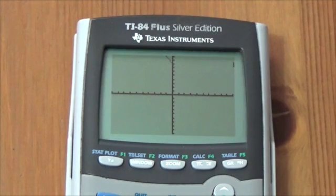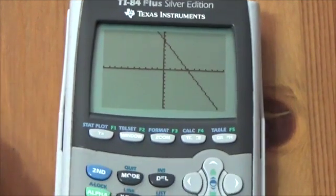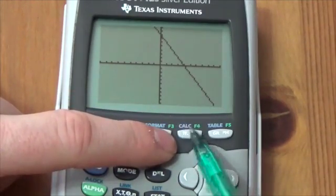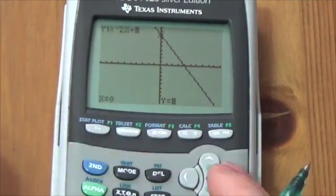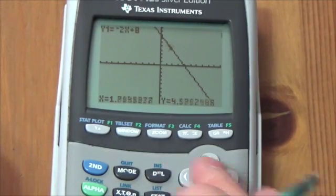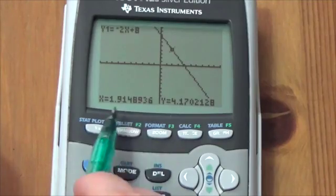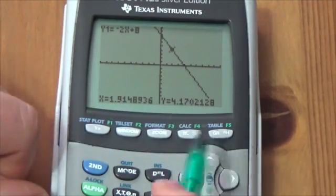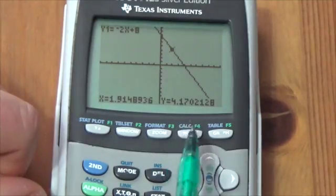So now I press graph and there's my line. Now, I want to focus your attention on the calc menu, just above the trace button. If you press trace, what that will allow you to do is you can move the cursor across the graph here and it will follow along that line and it will give you the points here. But I think a far more useful tool is this calc menu.